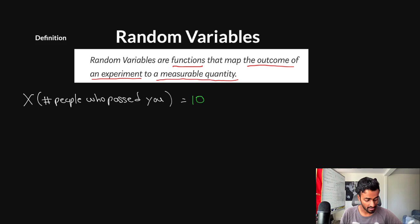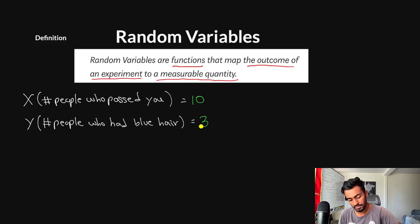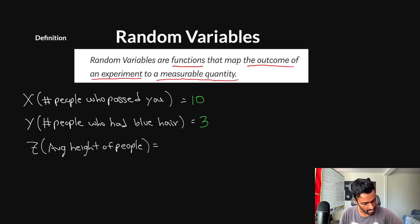Now this we know was 10 people. So we'll represent this with just a numeric quantity of 10. Similarly, let's define another random variable for the second question that we asked. So we'll call this one Y, and we'll say this is going to be the number of people who passed you that had blue hair. And this, as we mentioned before, is going to be three people, and we'll just write the numeric quantity three, which is a measurable quantity. And now we're going to define a third random variable, capital Z, the third question that we asked, which is the average height of the people who passed us during the experiment. And this also, as we mentioned before, is going to be 165.32, which is a measurable quantity.